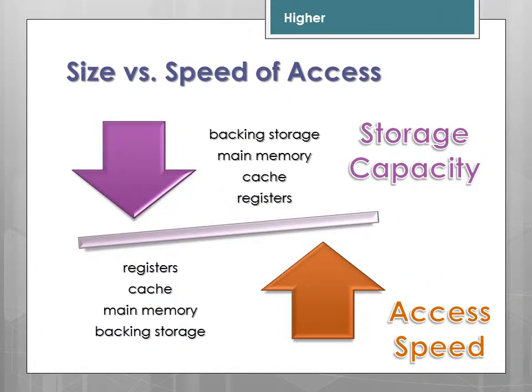As a general rule of thumb, the larger the storage capacity — with backing storage such as hard drives being the biggest — the slower the access speeds. As capacity generally gets smaller, access speed generally gets faster. There is always a balance between those two.